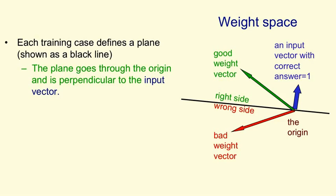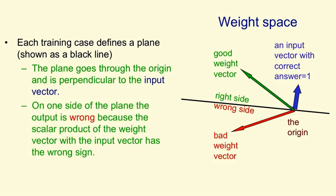Conversely, if we have a weight vector like the red one that's on the wrong side of the plane, the angle with the input vector will be more than 90 degrees. So the scalar product of the weight vector and the input vector will be negative. And we'll get a scalar product that's less than 0, so the perceptron will say no or 0. And in this case, we'll get the wrong answer. So to summarize, on one side of the plane, all the weight vectors will get the right answer. And on the other side of the plane, all the possible weight vectors will get the wrong answer.